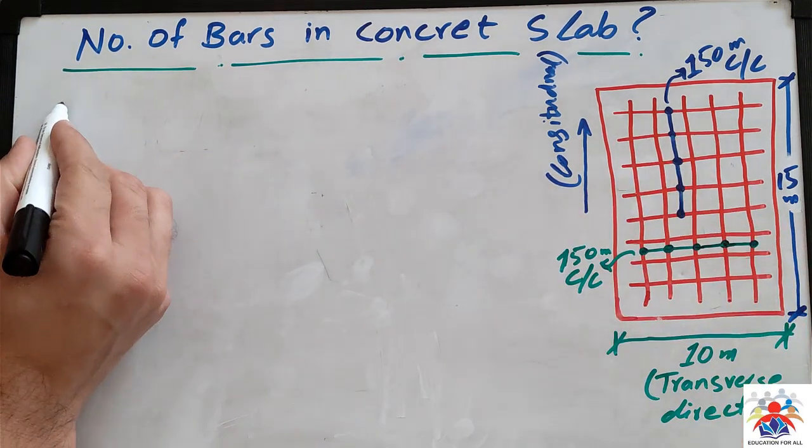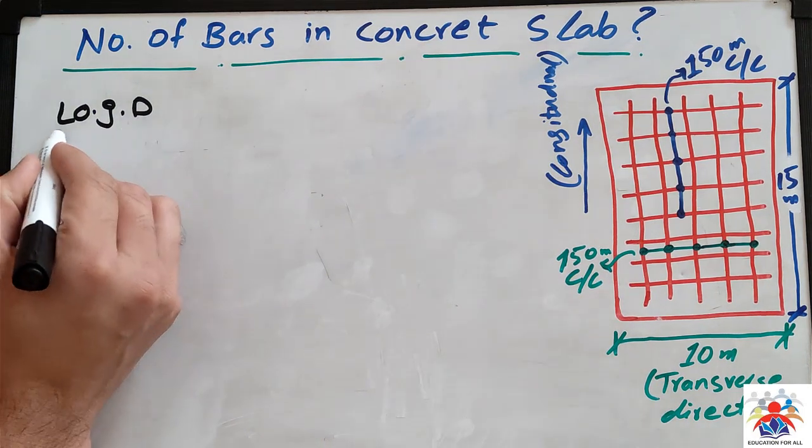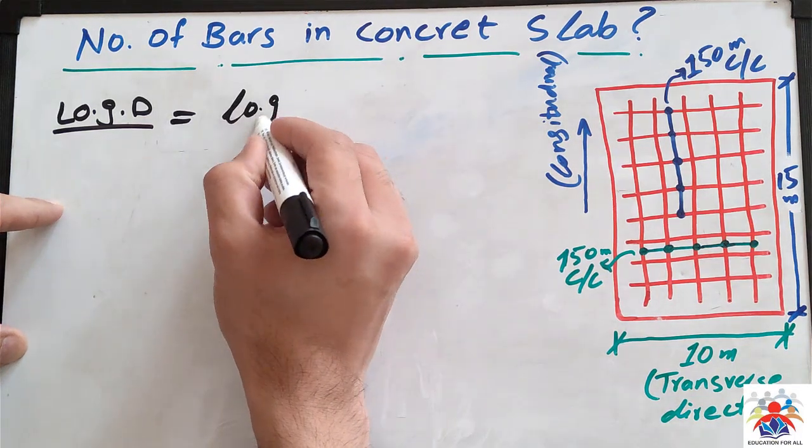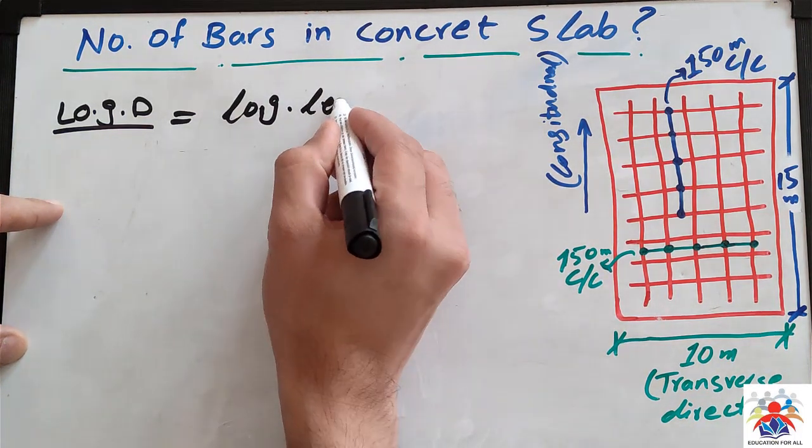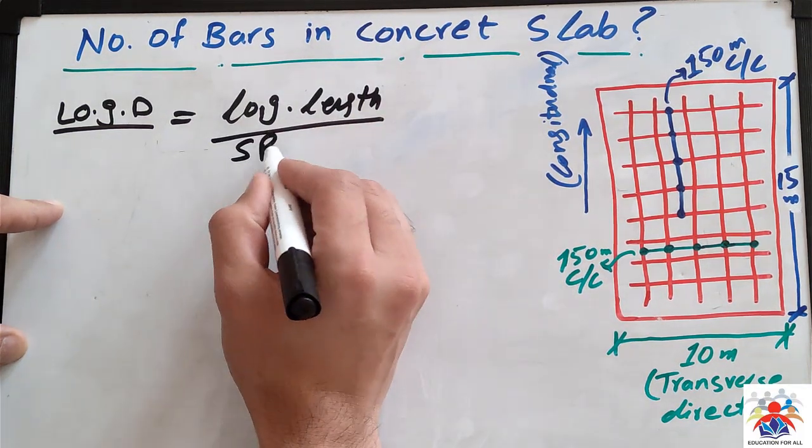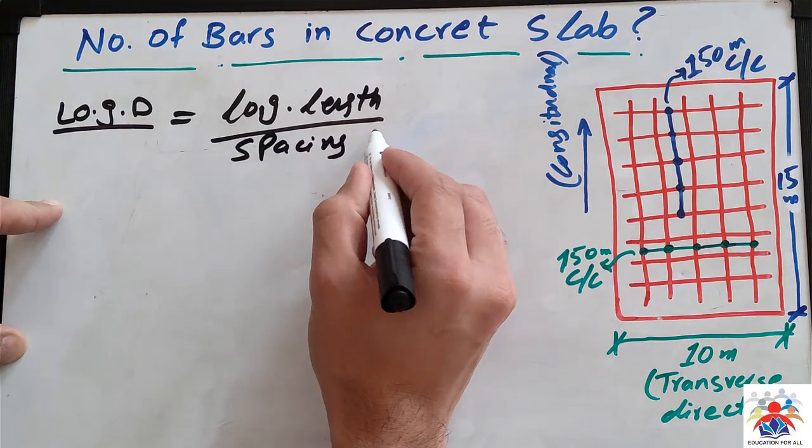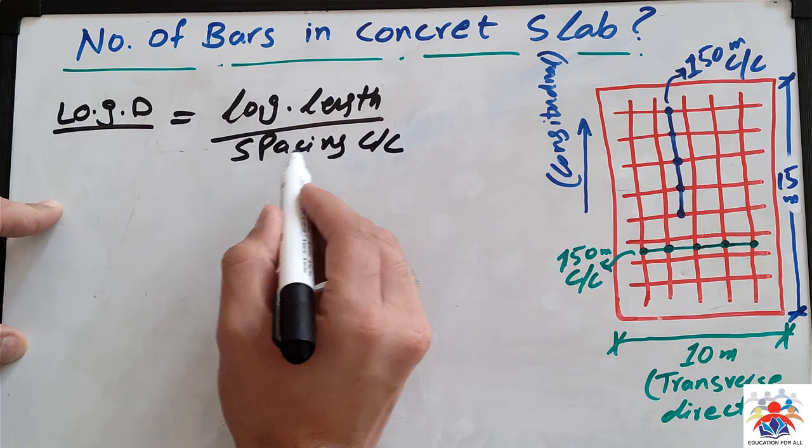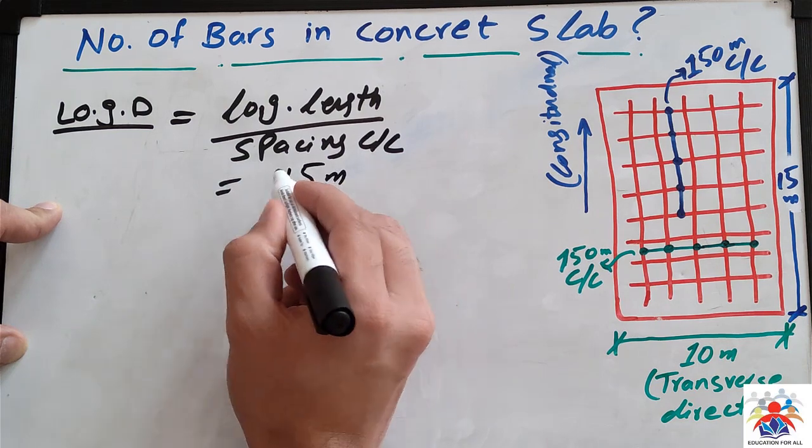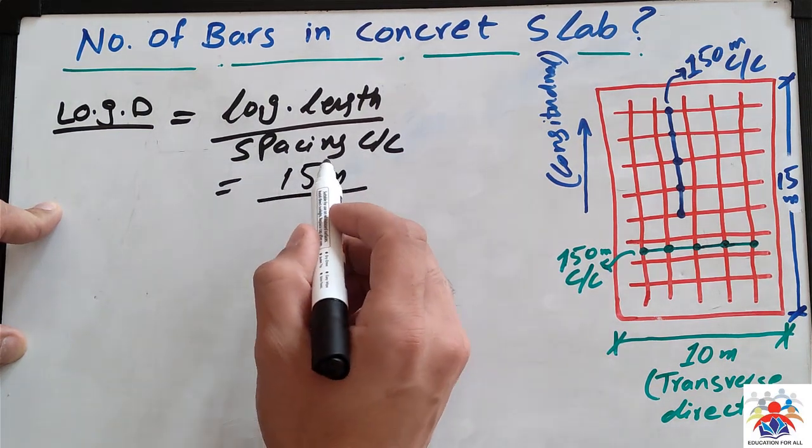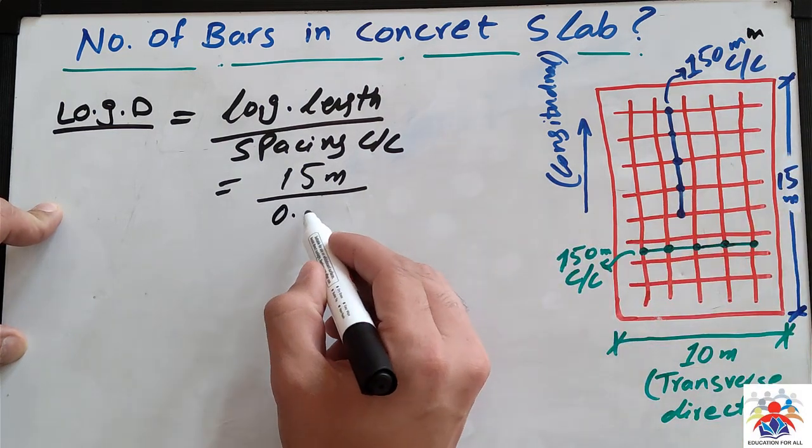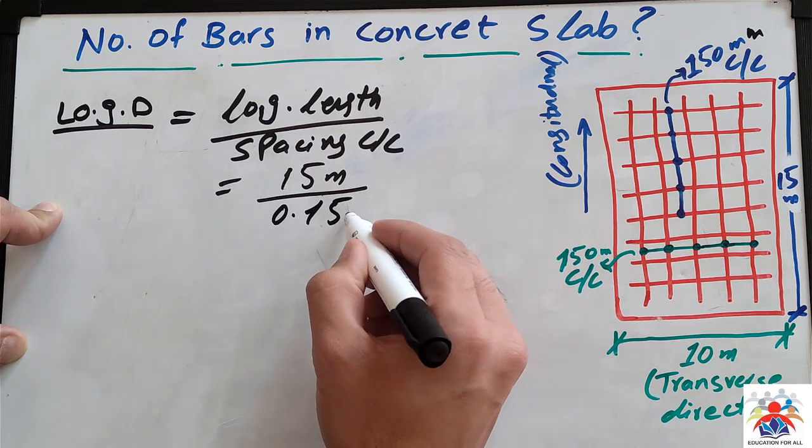So longitudinal direction, I'll just write a short name. The formula for this is longitudinal length divided by spacing center to center. For example, c/c is center to center. Longitudinal length we have 15 meter divided by spacing center to center is 150 millimeter. So that means it's going to be 0.15 meter.